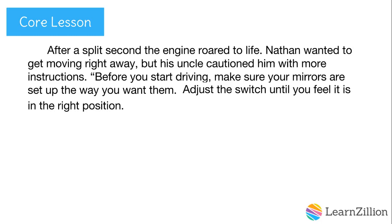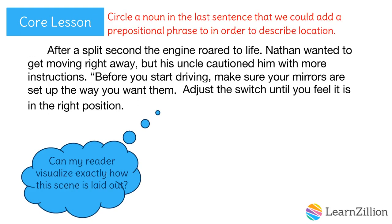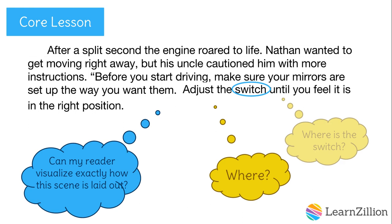Let's move on to the next few sentences. Again, I want to ask myself: can my reader visualize exactly how the scene is laid out? Where do you think we should add a prepositional phrase to clarify meaning? Circle a noun in the last sentence where my reader might need more information about its location in order to imagine this scene. Pause the video while you work, and press play to continue. I think the location of the word "switch" is a bit unclear, so I want to clarify its location by asking myself: where, specifically, is the switch?